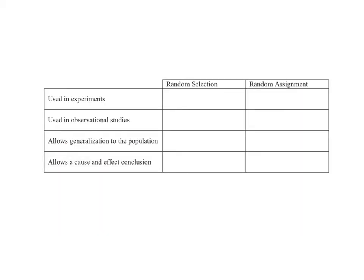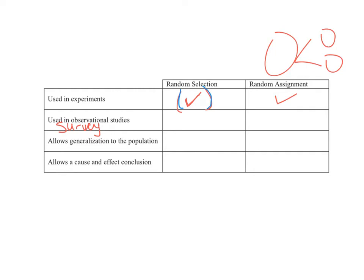We've talked about experiments, observational studies, and surveys. A survey is a type of observational study — it's your only interference is asking questions. In experiments, we must have random assignment. If we don't have random assignment, you're not randomly splitting the group into two different groups and therefore you cannot conclude cause and effect. Random selection is really nice to have in experiments — I'm putting it in parentheses because you don't have to have it, but it's great because it lets you generalize to the population.